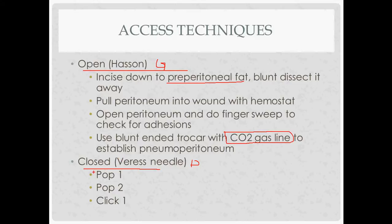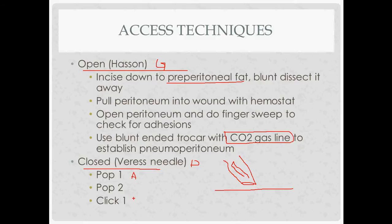The other way is using the Veress needle — favored for more pelvic-type surgeries. The needle has a sharp beveled edge with a safety stylet inside. You insert it into the abdomen, most commonly at the belly button, and you'll hear two pops and a click. The first pop is when the needle goes through the abdominal fascia, the second pop when it goes through the peritoneal fascia, and the click is when the safety stylet comes out — a dull tip that prevents the sharp edge from damaging structures underneath. Remember, just beneath the belly button is the abdominal aorta dividing into the common iliacs.